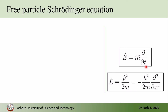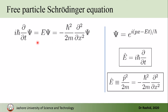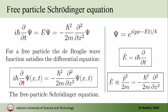We now have two forms of the energy operator: one in terms of the time derivative, and another in terms of the momentum or the spatial derivative. If we act both on the wave function ψ, in both cases we will have E·ψ. So dropping the middle term and equating the two, we obtain the free particle Schrödinger equation.